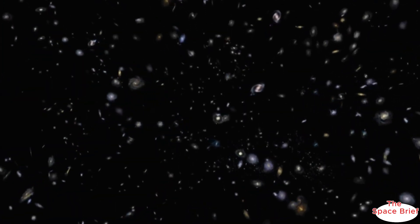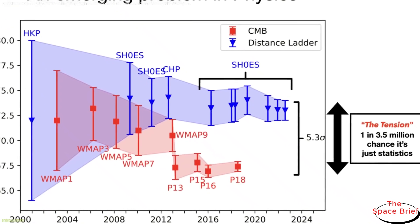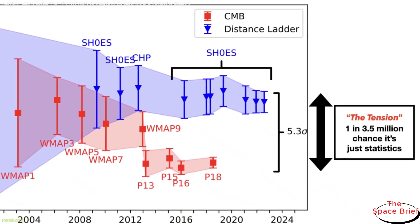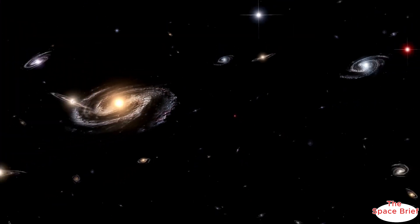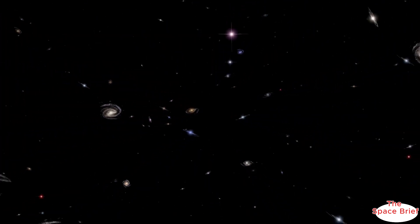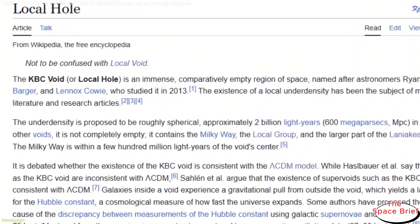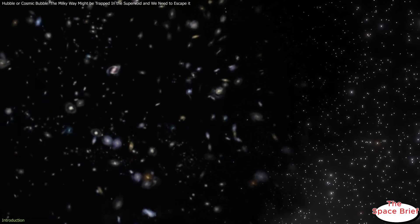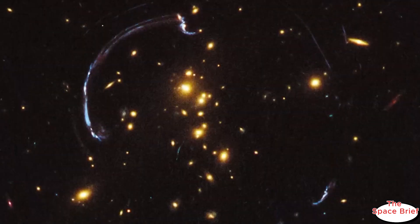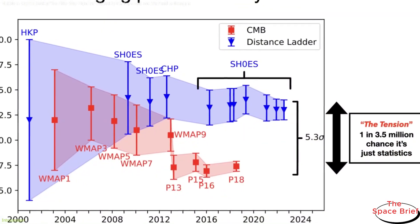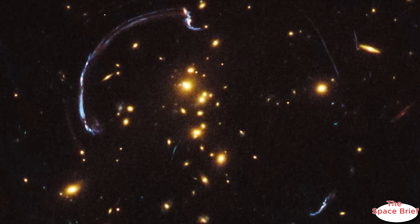The Hubble tension — a puzzling disagreement in how we measure the universe's rate of expansion — might finally have a solution. Scientists are exploring a fascinating new hypothesis that places our galaxy inside a vast underdense region of space called the KBC supervoid. This colossal cosmic hole could be skewing our measurements of the universe's expansion.